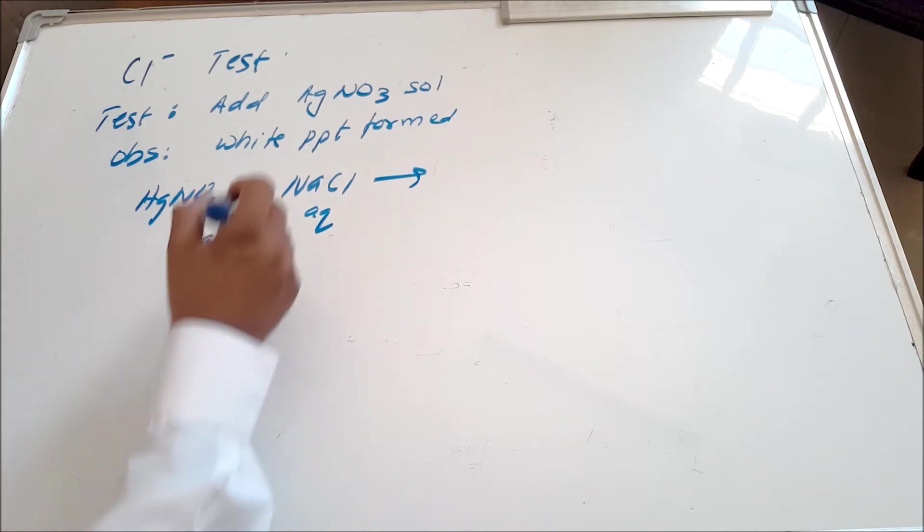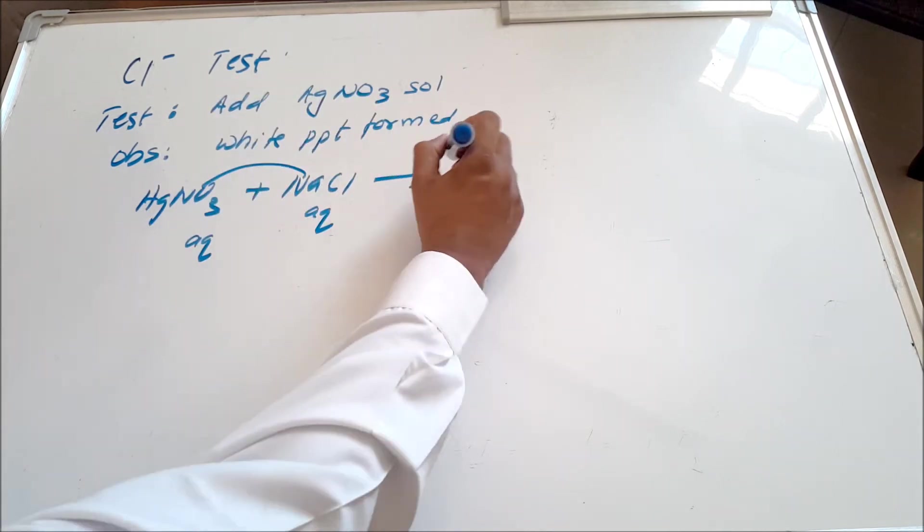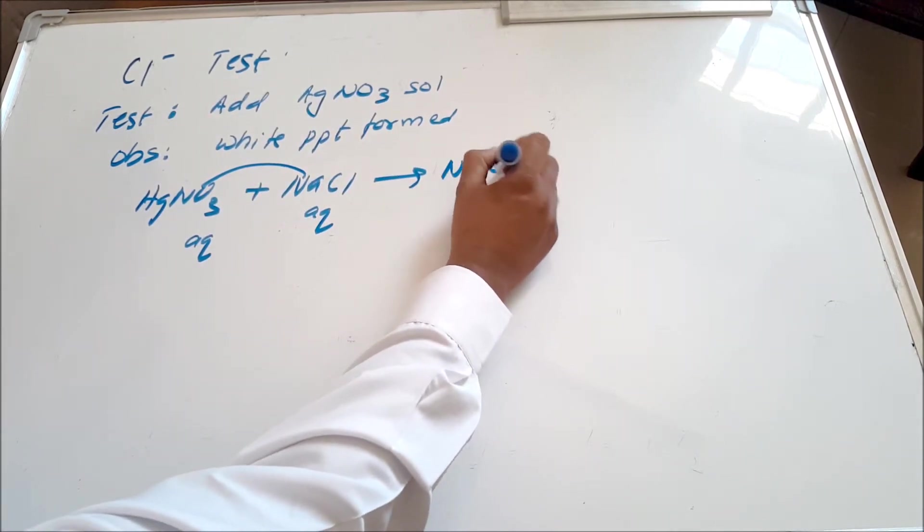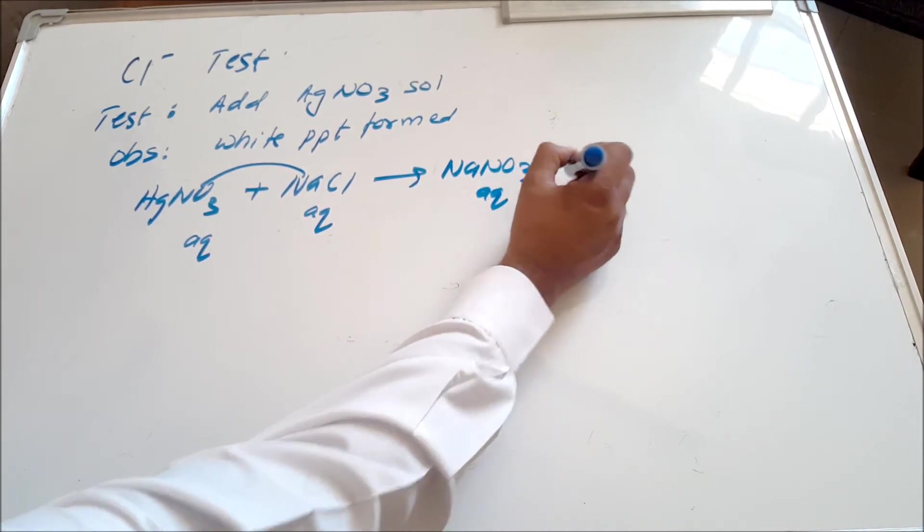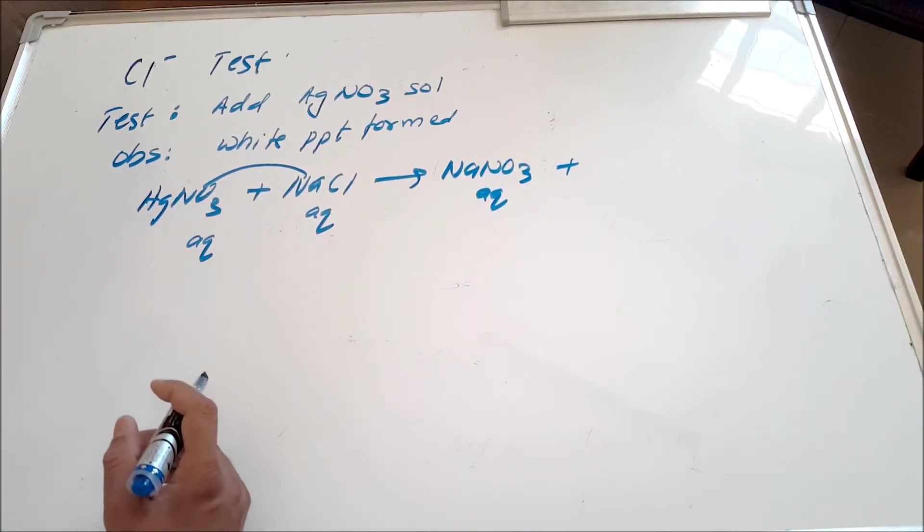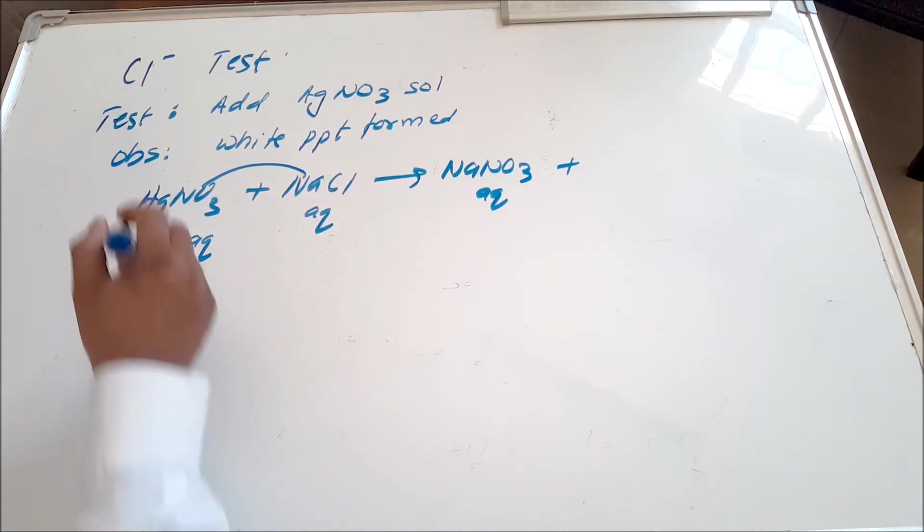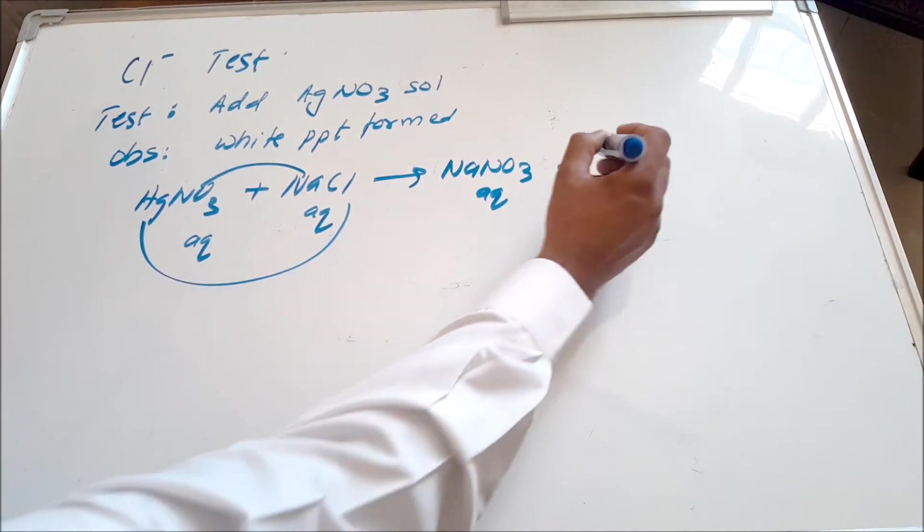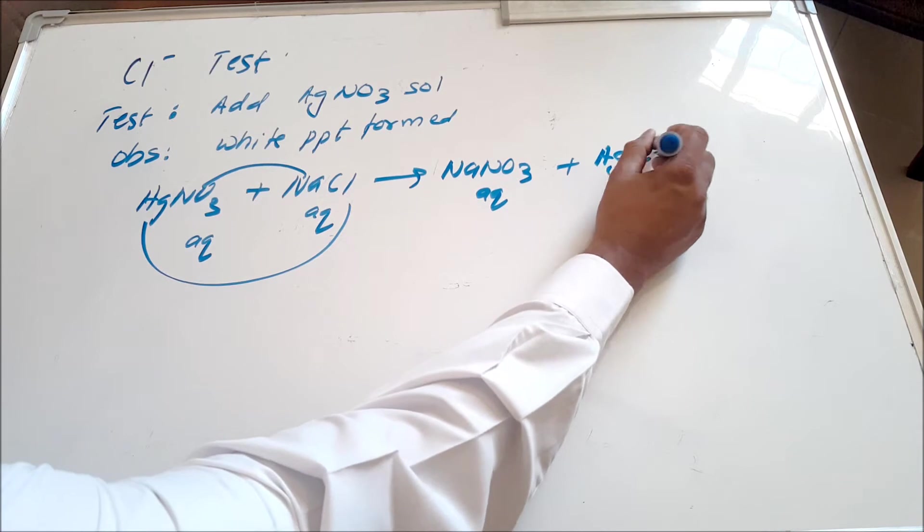Basically the Na and the NO3 react together to form NaNO3, sodium nitrate. You must remember all salts of sodium are soluble, including nitrate, but the Ag combines with Cl to form AgCl. That's the white precipitate, so that's what you see in your test tube.